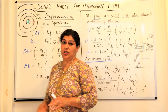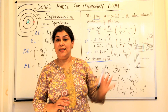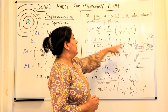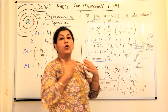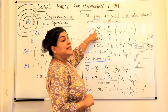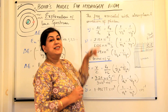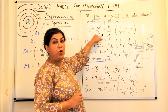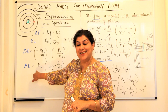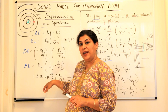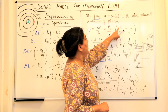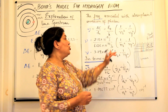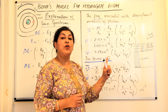Next, to calculate the frequency of the emitted radiation in the spectrum, we use E = hν, so frequency ν = ΔE / h. Since ΔE = R_H × (1/N_i² − 1/N_f²), we get ν = R_H / h × (1/N_i² − 1/N_f²), where h is Planck's constant with a value of 6.626 × 10⁻³⁴ joule·seconds.